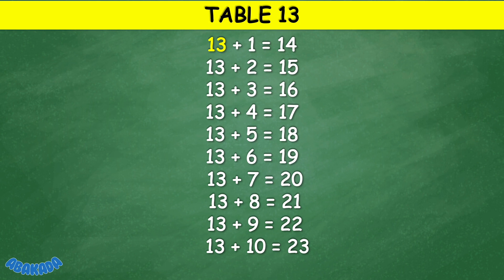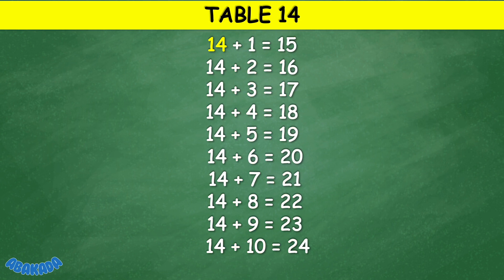Table 13: 13 plus 1 equals 14, 13 plus 2 equals 15, 13 plus 3 equals 16, 13 plus 4 equals 17, 13 plus 5 equals 18, 13 plus 6 equals 19, 13 plus 7 equals 20, 13 plus 8 equals 21, 13 plus 9 equals 22, 13 plus 10 equals 23.